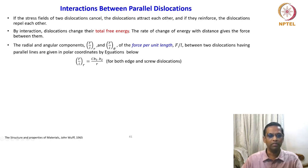This equation is F/L_r = C × b1·b2 / r. This is valid for both edge and screw dislocations. The angular component is given by F/L_θ = C × b1·b2 × sin(2θ) / r. This is for edge dislocation, which is zero for screw dislocation.